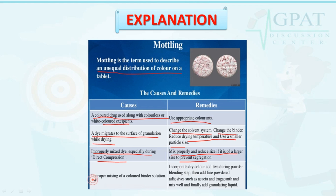The next cause is improper mixing of a colored binder solution. Its remedy is to incorporate dry color additive during the powder blending step, then add fine powdered adhesive such as acacia and tragacanth and mix well, and finally add granulating liquids.